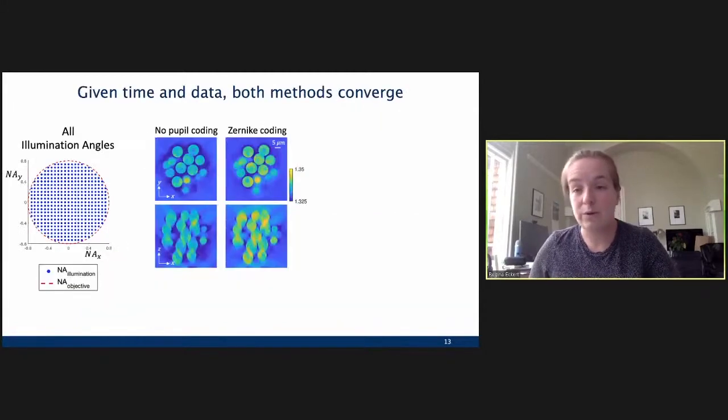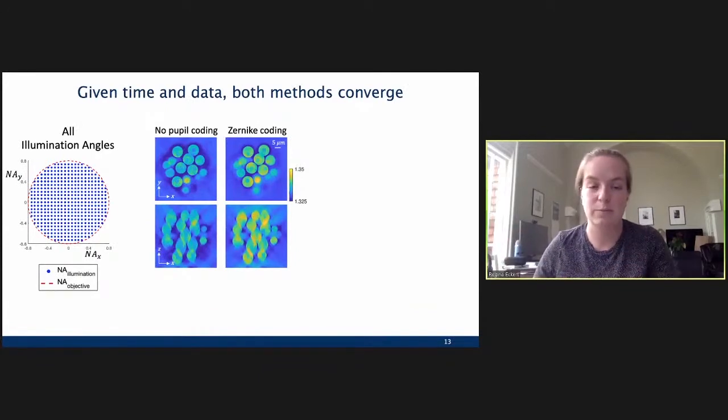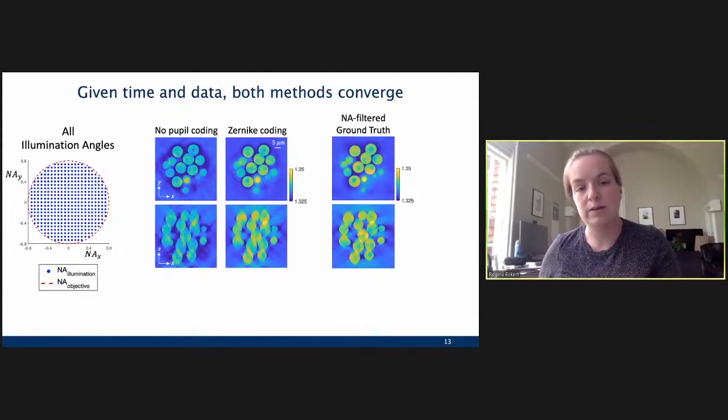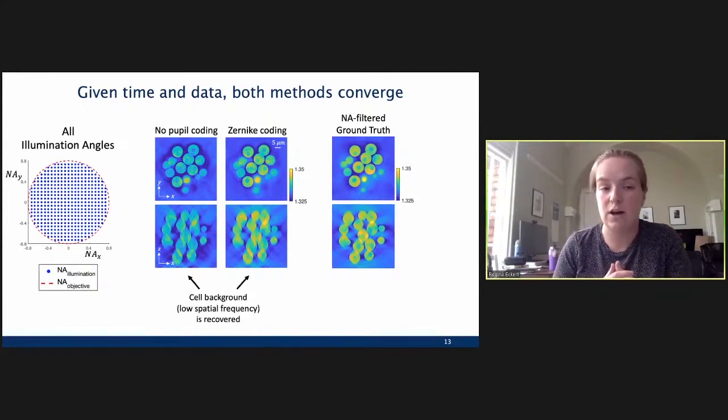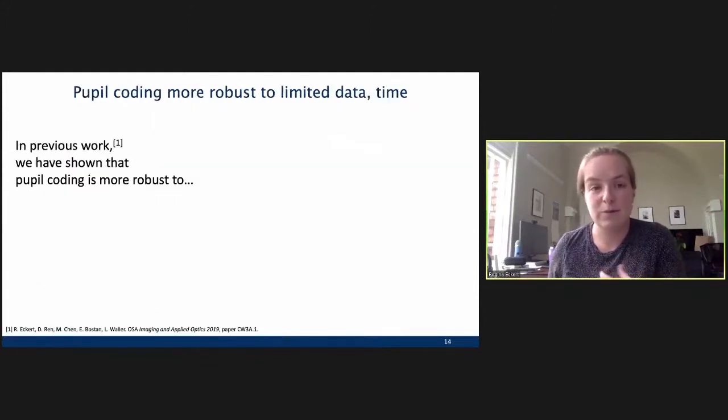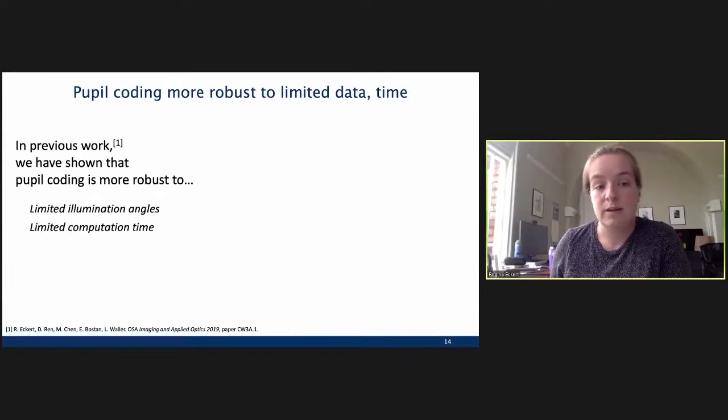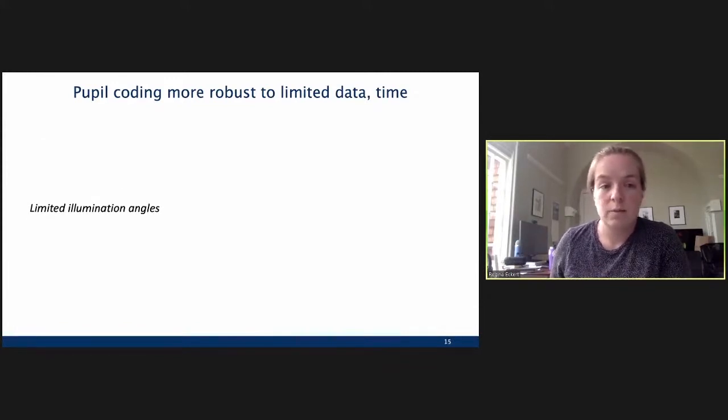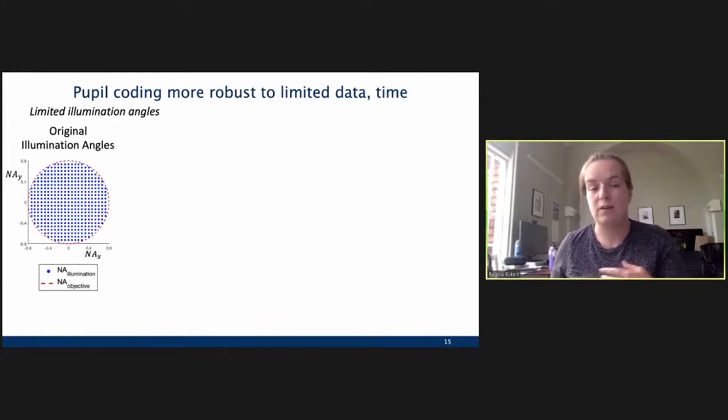And then, we're going to reconstruct some estimated volume X that explains the measurements that we have. All right. So, what we've seen in this system is that actually, given all time and all data to compute, both of these methods converge fairly well. So, here, we're having all of our illumination angles up to the NA of our objective that we're using to measure. And so, when we compare these reconstructions to the ground truth, we can see that both of them have fairly good reconstruction of the cell background. So, this low spatial frequency, which corresponds to the RI values, is recovered fairly well. However, what we've seen in previous work is that this pupil coding makes the system more robust to limited illumination angles, limited computation time, and also increased background noise. But I'm going to focus on limited illumination angles here, because that actually makes our system that we're using a lot easier to use if we can have limited illumination angles.